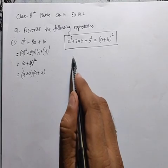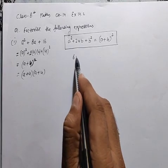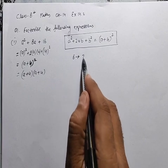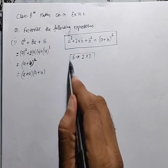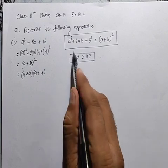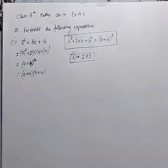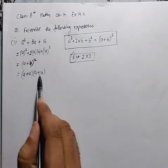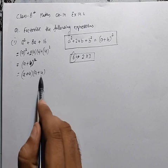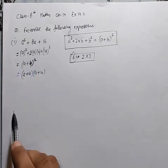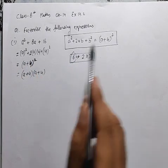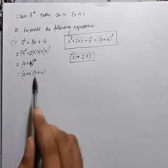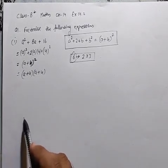इसी को factorization कहते हैं। बचपन में जैसे 6 को factorize करते थे — 2 into 3 कर देते थे। यहाँ पर 6 की जगह यह पूरी equation है, और इसे 2 parts में convert करते हैं जिन्हें multiply करने पर वही expression वापस आए। तो हमने identity का use करके इसको factorize कर दिया।